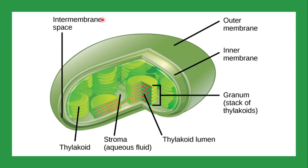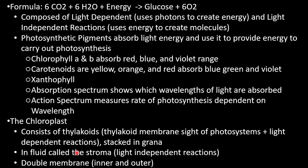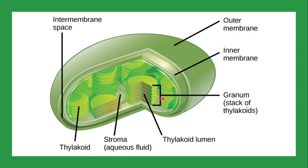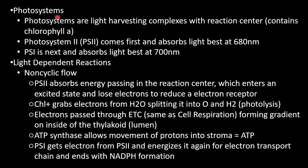Light-dependent reactions occur on the thylakoid membrane, and thylakoids are stacked into grana. Inside the thylakoids is the lumen; the fluid inside the chloroplast is called the stroma. The electron transport chain in photosynthesis occurs across the thylakoid membrane, creating a concentration gradient to form ATP. The chloroplast has a double membrane, which we believe is because it was once a separate living organism assimilated into the plant cell.